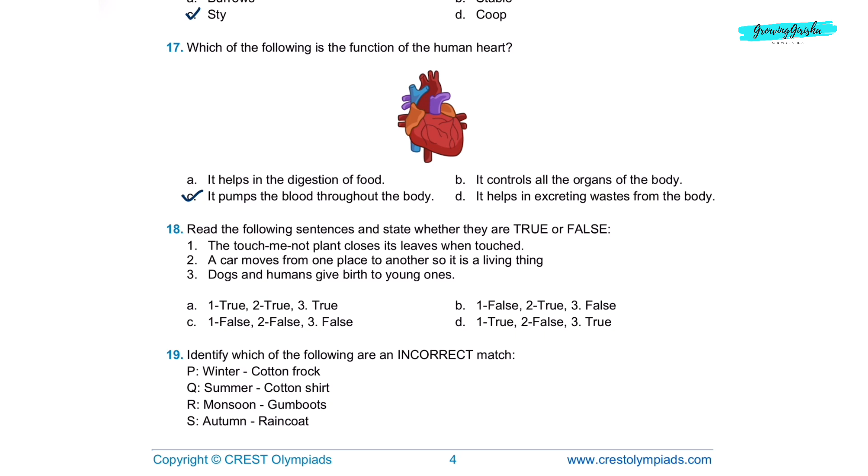Question 18. Read the following sentences and state whether they are true or false. Statement 1, the touch-me-not plant closes its leaves when touched. This is correct. Statement 2, a car moves from one place to another so it is a living thing. This is incorrect. Statement 3, dogs and humans give birth to young ones. This is correct. So the correct option would be one true, two false, three true, which is in option D.